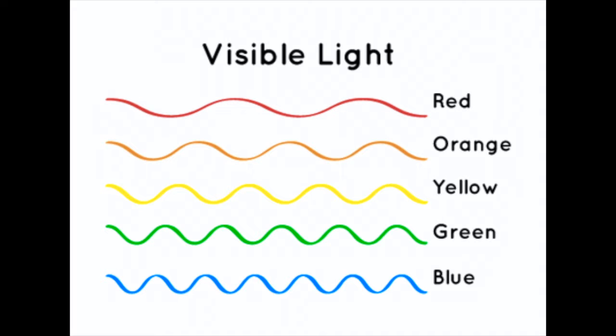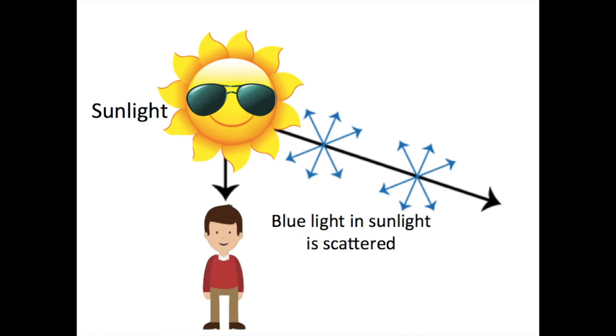Now, let's see what happens to sunlight when it reaches Earth's atmosphere. When sunlight reaches Earth, it is scattered in all directions by the gases and particles in the air. Red, orange and yellow light waves aren't affected much by the air and so they pass straight through. Blue light waves are scattered more than other colours because they travel as shorter, smaller waves.